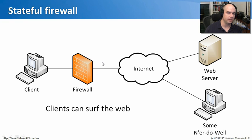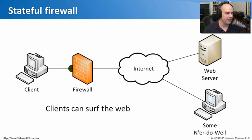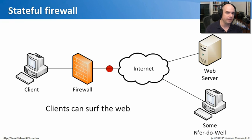It's a very simple policy, but it still allows my client to talk to the web server. Because the firewall knows that my client started this conversation, it lets the reply come back in. If I don't have a previous conversation set up to the ne'er-do-well, he can send all the frames he wants — but because there is no current state for that conversation, we block it at the firewall and it never gets to the client.